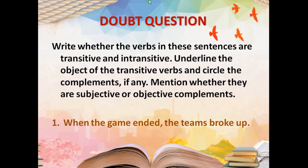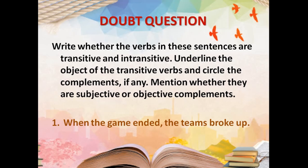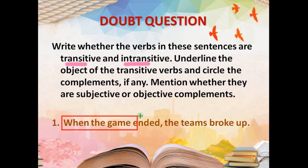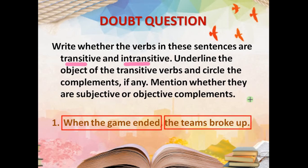Before starting today's class, some of the students have doubts in this particular question. The question was: write whether the verbs in these sentences are transitive and intransitive. Underline the object of the transitive verbs and circle the complement if any. Mention whether they are subjective or objective complement. In this single sentence, we have two sentences. The first one is 'when the game ended,' and the second sentence is 'the teams broke up.' We have already done clauses.